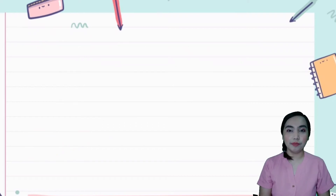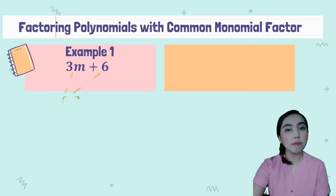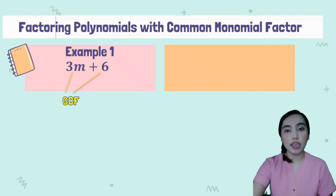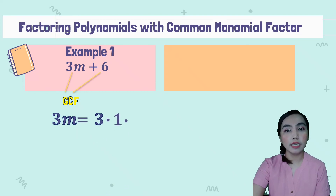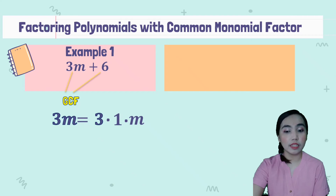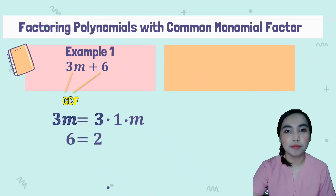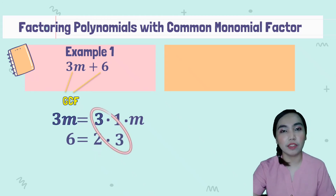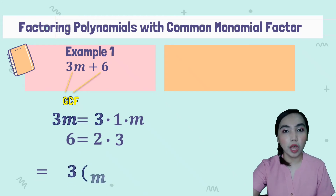Gawin naman natin siya sa binomial. Let's have an example. So example 1: 3m plus 6. So sa 3m plus 6, kukunin natin ang GCF ng 3 and 6. Ang ating 3, ang factors niya ay 3 times 1 times m. And sa 6 is 2 times 3. So they have their common factor, which is 3. So 3 is their first factor. So it is equal to 3 times the quantity of the remaining factors, which is (m + 2).